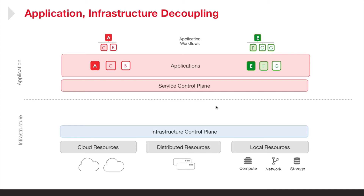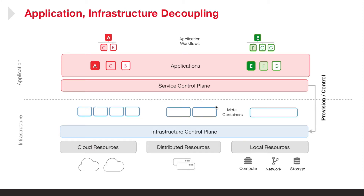In the C3DNA platform, each of the application workflows is managed top-down and through a service control plane requests resources from the infrastructure control plane. This is how we're able to provision resources — essentially meta containers which are capable of hosting or running application components or workflows — provisioned according to the requirements specified in the application blueprint. The service control plane can then also place or schedule the application processes into the appropriate meta containers.